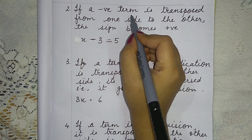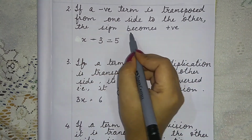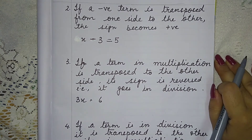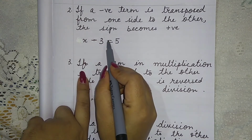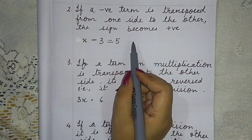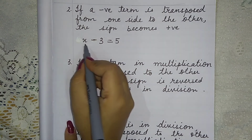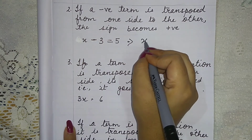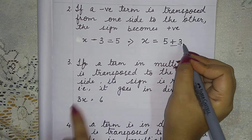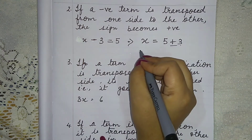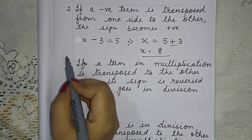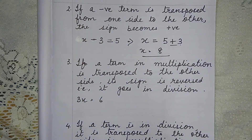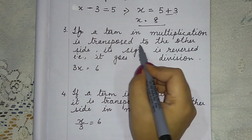Point number 2: if a negative term is transposed from one side to the other, its sign becomes positive. For example, x minus 3 equals 5. The negative 3 moves to the right side and becomes positive: x equals 5 plus 3, so x equals 8.